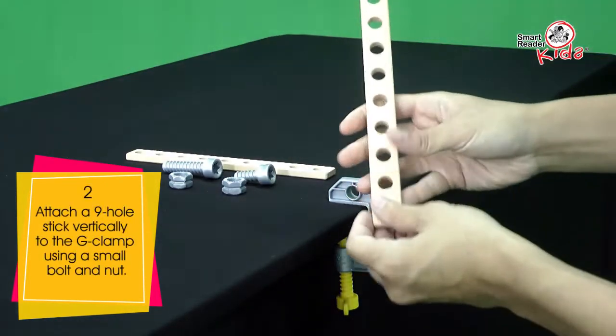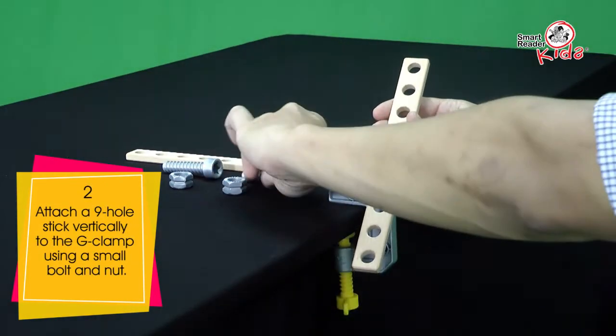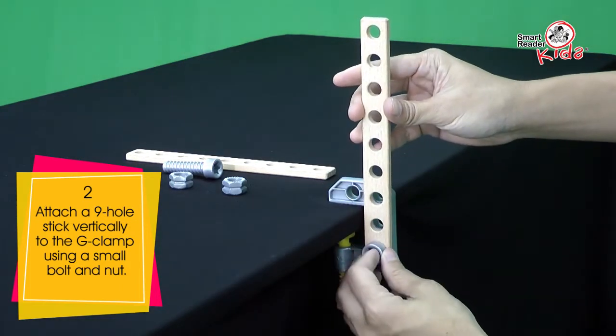Attach a 9-hole stick vertically to the G-clamp using a small bolt and nut.